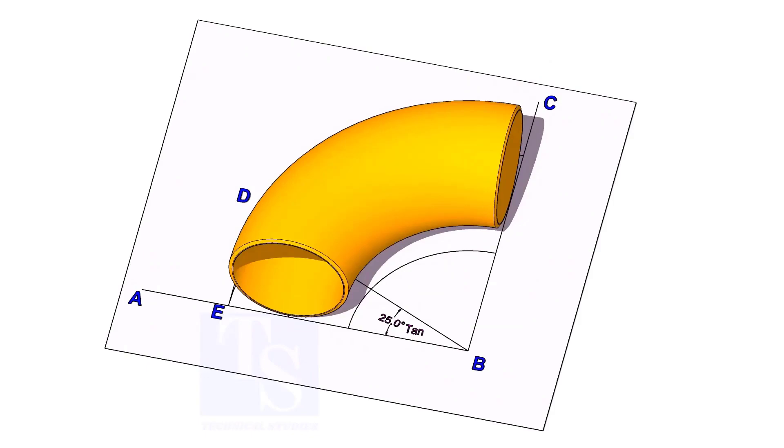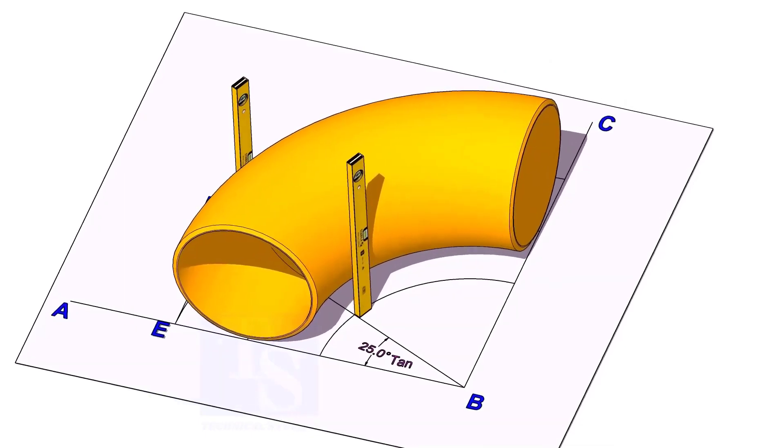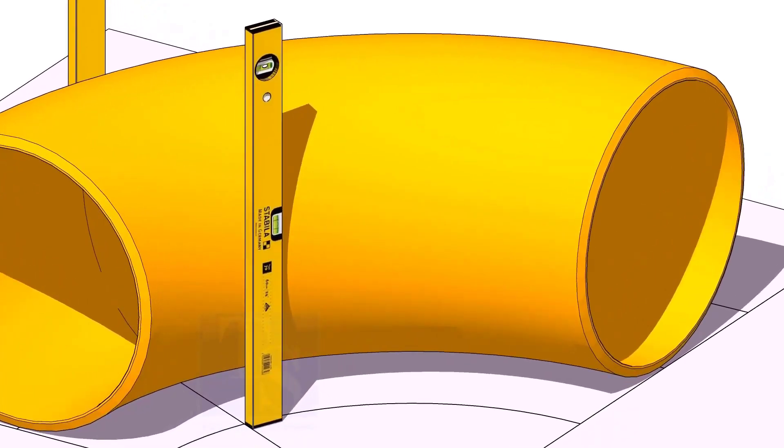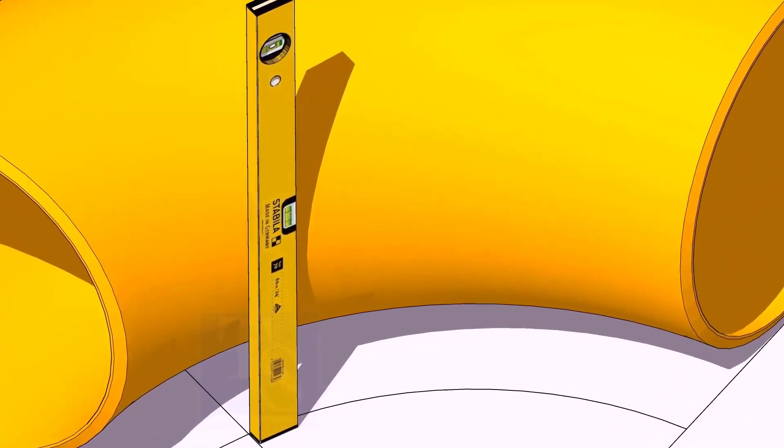Hold two large level bottles at the edge of the elbow on both sides vertically and strike a mark where the level bottle edge touches the elbow.